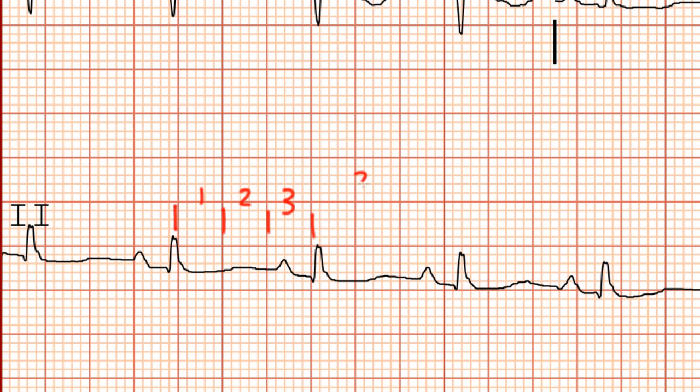Thus, our heart rate is 300 divided by 3, or approximately 100 beats per minute. Let's say we had four boxes between consecutive QRS complexes. Well, in that case, our heart rate would be 300 divided by 4, or 75 beats per minute. And if you had five large boxes between consecutive QRS complexes, then your heart rate would be 300 divided by 5, or 60 beats per minute. Trust me, I'm going somewhere here with this.